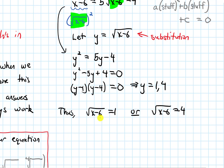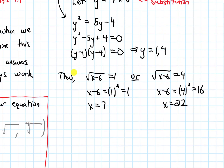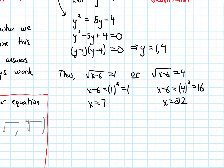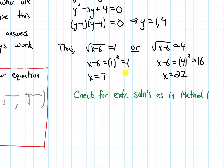With both of these, I can just square both sides. For the first: x minus 6 equals 1 squared, which is 1, so x equals 7. For the second: x minus 6 equals 4 squared, which is 16, so x equals 22. I still need to check for extraneous solutions, and the check is exactly the same as what we did in Method 1, so I won't work it out again. Both answers work, giving x equals 7 and x equals 22.